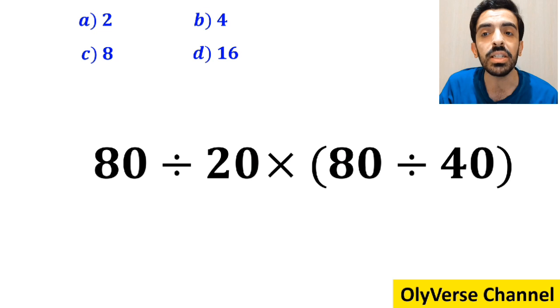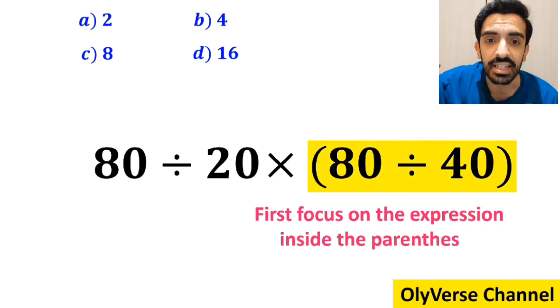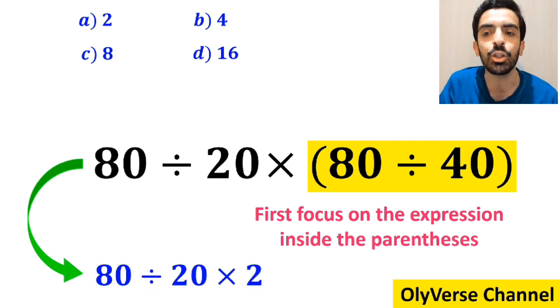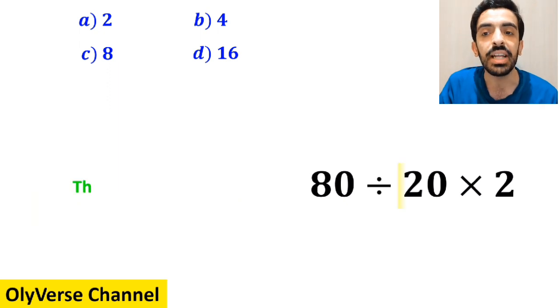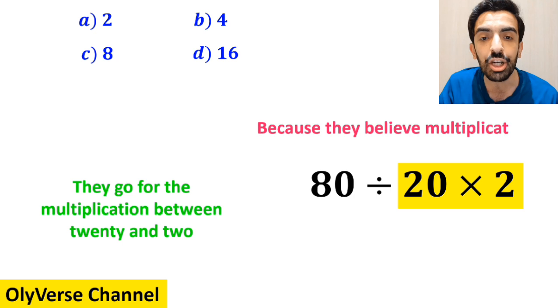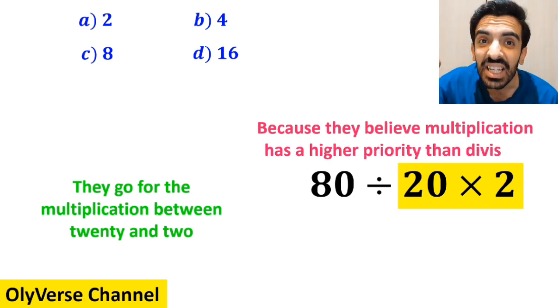Many people when starting to solve this question first focus on the expression inside the parenthesis and instead of considering the whole expression they rewrite it as 80 divided by 20 multiplied by 2. In the next step they go for the multiplication between 20 and 2 because they believe multiplication has a higher priority than division.